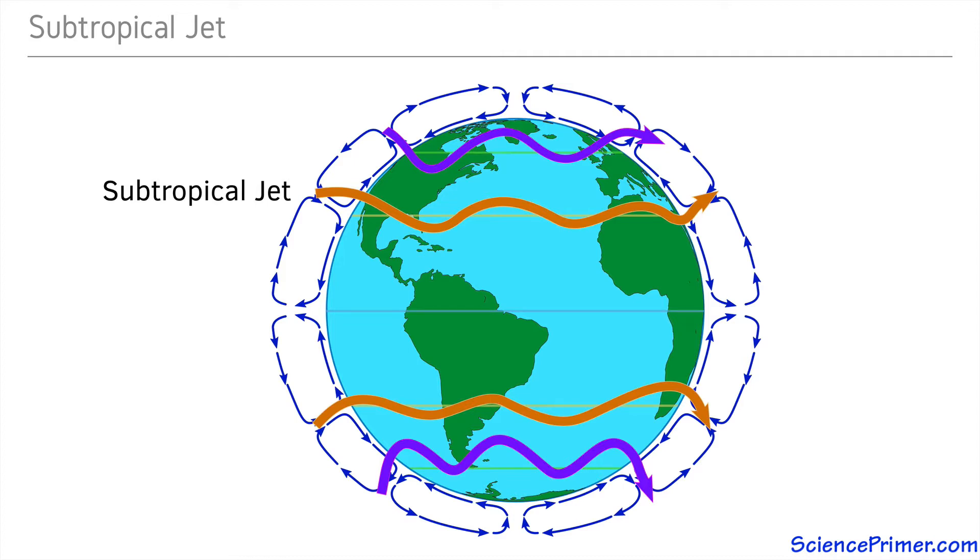The north and south meanders behave like waves and propagate eastward over time. Since temperature differences between the air in the convection cells influence the strength of the jet stream, the polar jets tend to be stronger during the wintertime.